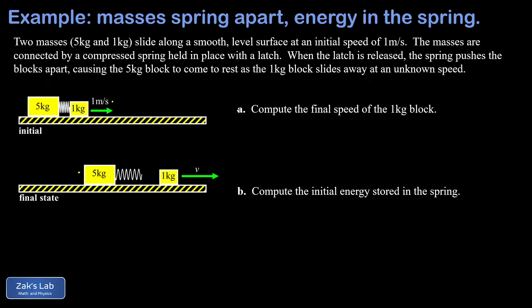In part a, we're trying to find the final speed of the smaller block, the one kilogram block. That's the unknown. Because I have an isolated system here with these two objects just pushing on each other, momentum is going to be conserved.